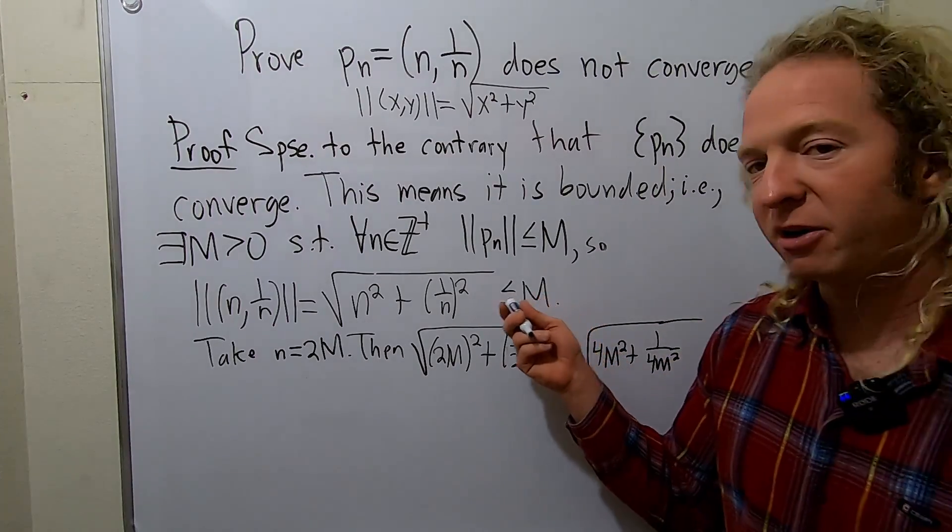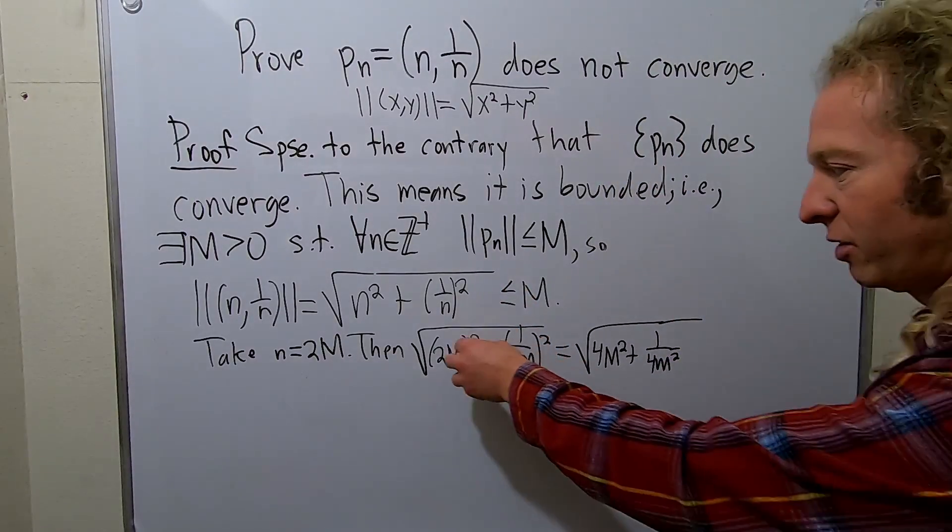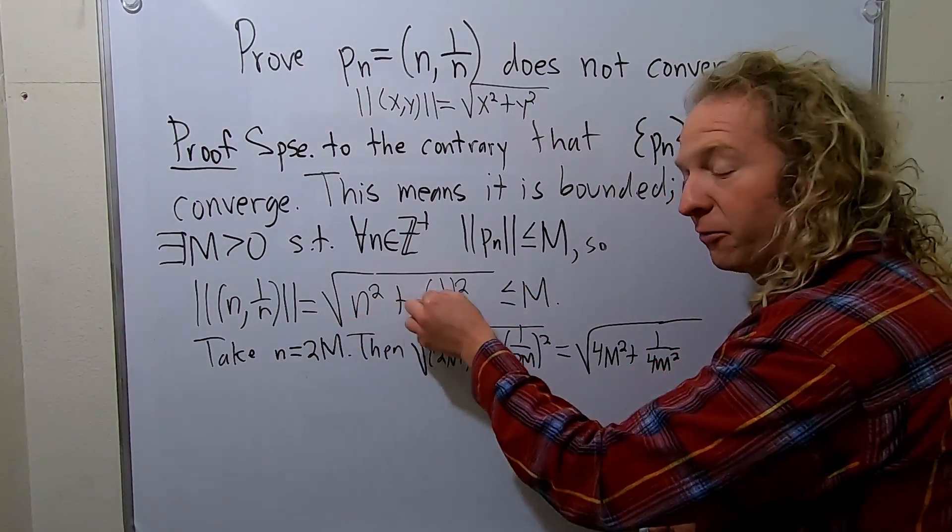And we somehow have to show it's bigger than M to reach a contradiction, right? So I'm just plugging little n in here, 2m in here for little n.